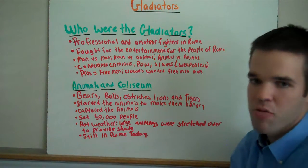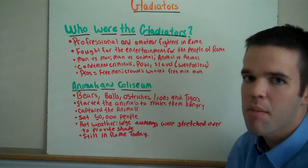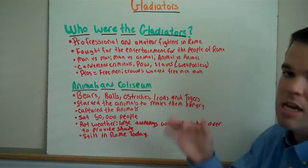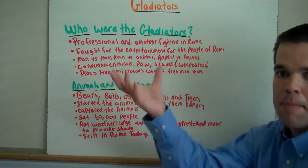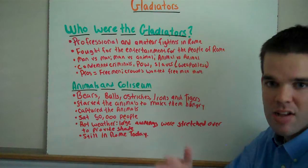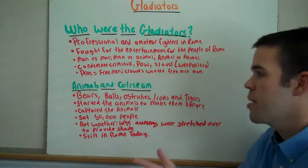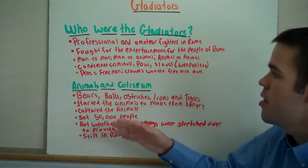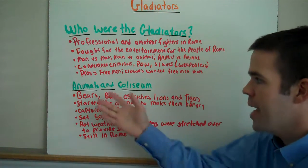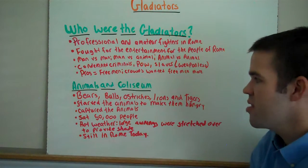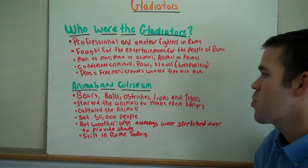Let's move on to animals. Oftentimes animals were involved in gladiator fights — whether trapdoors would pop open and animals would go after the gladiators, or it would be a one-on-one gladiator versus animal, or it could have been animal vs. animal. There were a few main animals that were involved: bears, bulls, ostriches, lions, and even tigers.